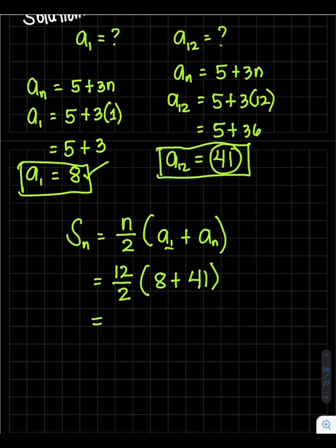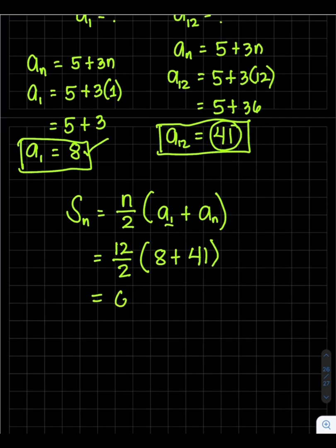Then, 12 divided by 2 is 6, times 8 plus 41, which is 49. Then 6 times 49 equals 294.